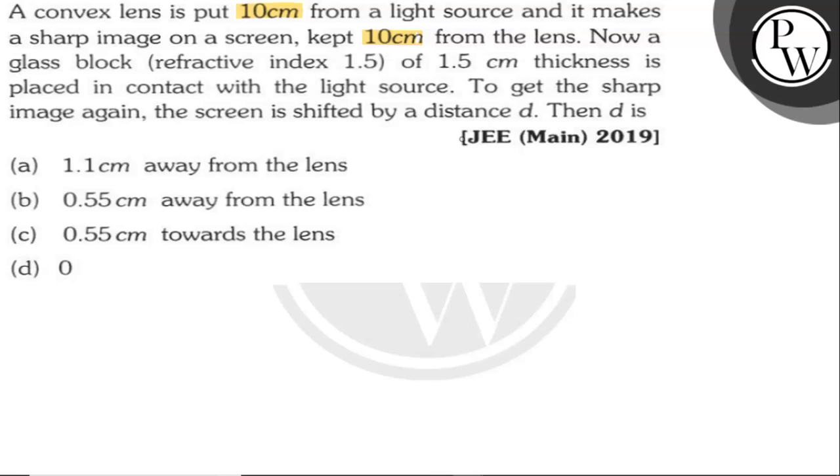Now, a glass block of refractive index 1.5 and 1.5 cm thickness is placed in contact with the light source. To get the sharp image again, the screen is shifted by distance D, then D is?